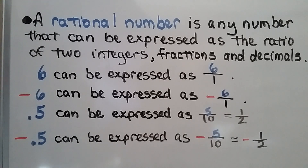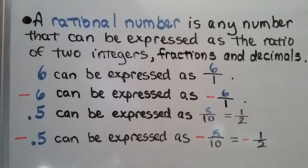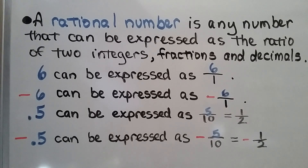And 0.5 — well, that's 5 tenths. We can write it as a fraction as 5 tenths, which is 1 half. And negative 0.5 is negative 5 tenths, and that's negative one half. So those are all rational numbers, but pi would not be a rational number. That would be irrational because we can't write pi as a fraction — it goes on forever.